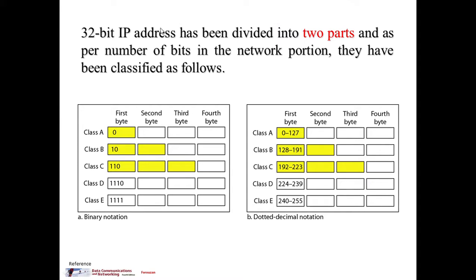An IP address is a 32-bit binary number assigned to different computers, and that IP address has been divided into two parts. One part represents a network and the second part represents the hosts within that network. With respect to the number of bits being used in the network portion, the IP address has been classified into Class A, Class B, and Class C.